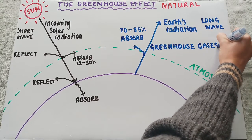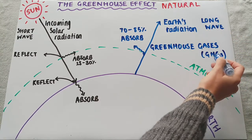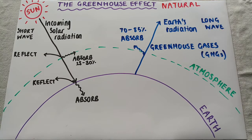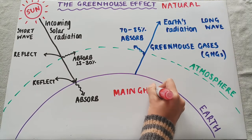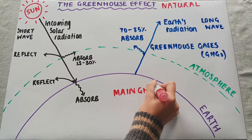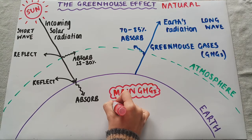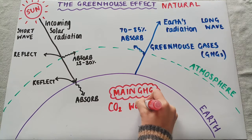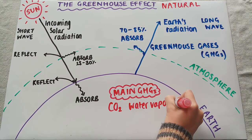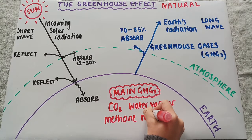Greenhouse gases are quite often called GHGs. In terms of these greenhouse gases, there are four main ones you need to know about: the first is carbon dioxide, we also have water vapor, then we have methane, and we have nitrous oxide.